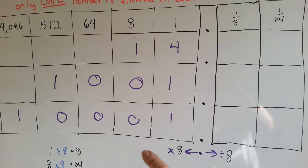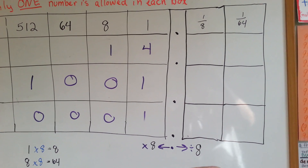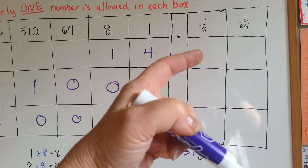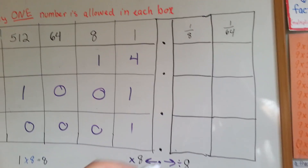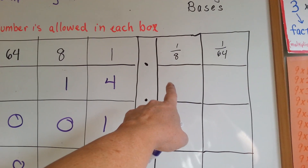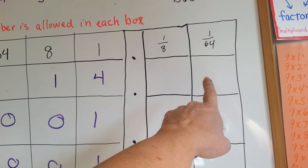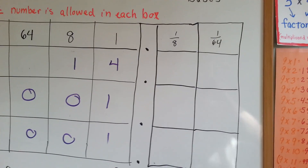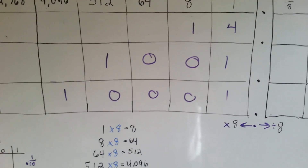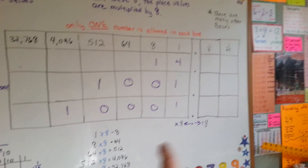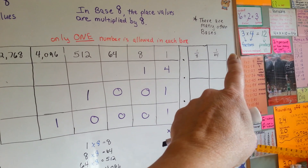You multiply by eight on this side of the decimal point, and you divide by eight on the right side of the decimal point. So these would be eighths. If you had three eighths, it would be in this column. Once you got smaller, it would get into sixty-fourths, it would be in this column. That's how the fractions and decimals would be set up on the right side of the decimal point — it would get smaller and smaller, going from sixty-fourths to five hundred and twelveths as the next column over.